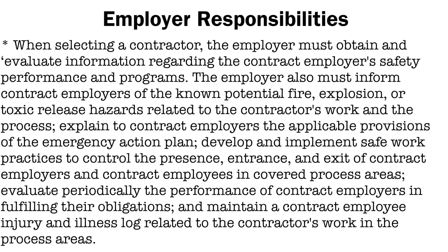The employer must inform the contractor employer of the known potential fire, explosion, and toxic release hazards related to the contractor's work and the process. The employer must explain the applicable provisions of the emergency action plan, develop and implement safe work practices to control the presence and entrance and exit of contract employees in covered process areas, and periodically evaluate the performance of the contract employer in fulfilling their obligations. The employer must also maintain a contract employee injury and illness log related to the contractor's work in the process area.